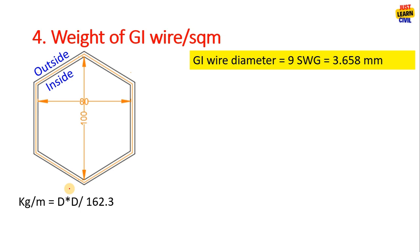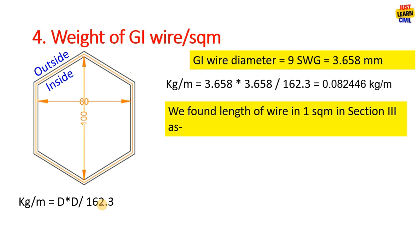We know the diameter of GI wire is 3.658 mm. Using the formula d² divided by 162.3, we get 0.8046 kg per meter. We found the length of GI wire in one square meter in section 3 as 45.53 meters.